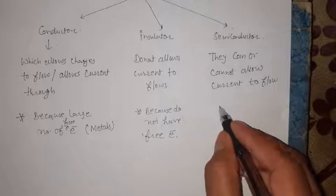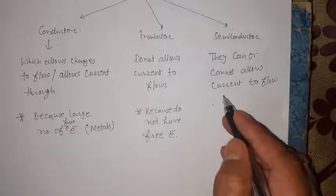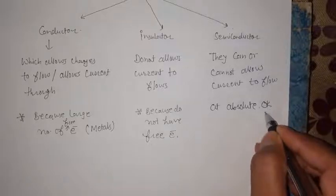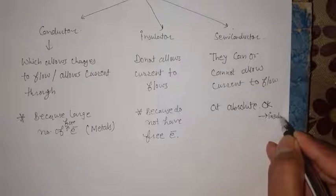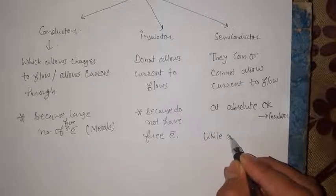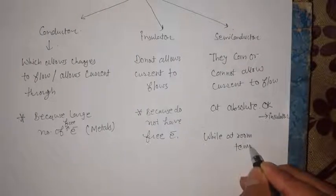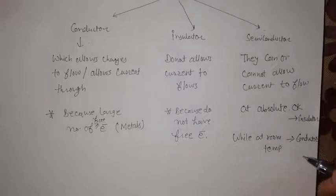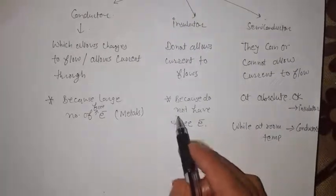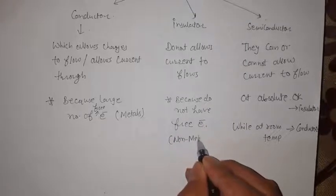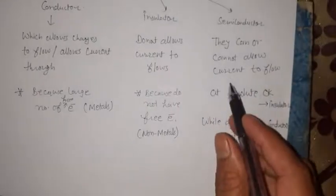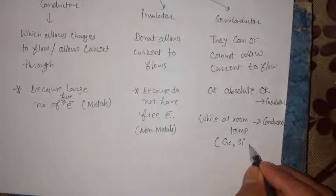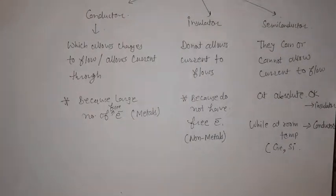For semiconductors, at absolute zero — zero Kelvin — they behave as insulators, while at room temperature they behave as conductors. So there is a temperature variation for them. Examples of insulators are non-metals. Examples of semiconductors are germanium, silicon, and gallium.